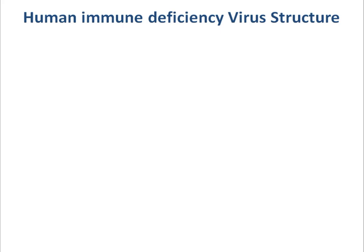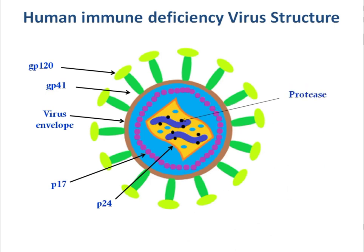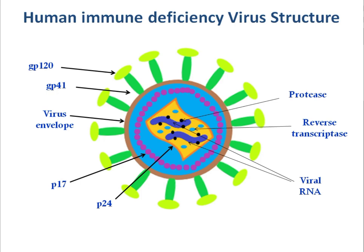First we are going to discuss about human immunodeficiency virus structure. The first two important components of virus structure are GP120 and GP41, which are helping the HIV virus to bind with the host cell receptor. Then the virus envelope, and P17 and P24 components. Two important enzymes are protease and reverse transcriptase enzyme, which along with the viral RNA form new assemblies of HIV virus inside the host cell.